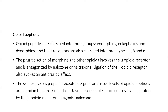Opioid peptides are classified into three groups: endorphins, enkephalins and dynorphins. Their receptors are also of three types: mu, delta and kappa. The pruritic action of morphine and other opioids involves the mu-opioid receptors and is antagonized by naloxone or naltrexone. Ligation of kappa-opioid receptors evokes antipruritic effects. Significant tissue levels of opioid peptides are found in human skin in cholestasis. Hence, cholestatic pruritus is ameliorated by the mu-opioid receptor antagonist naloxone.